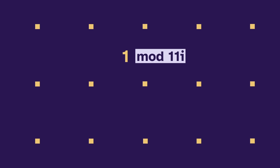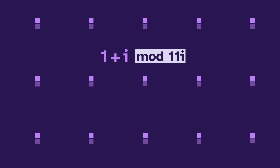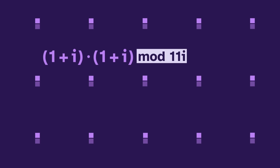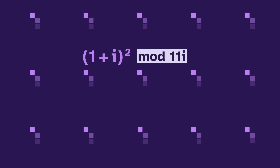To move to the next frame, we multiply by 1 plus i, which gives us different rectangles. And for the following frame, we multiply again by 1 plus i, to get even more rectangles. If we let this process continue, we get a nice pattern. This is the powers of 1 plus i, mod 11i.